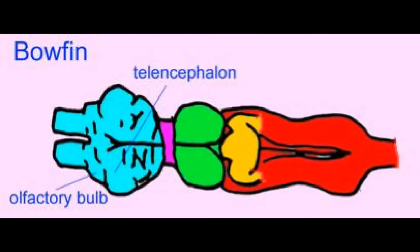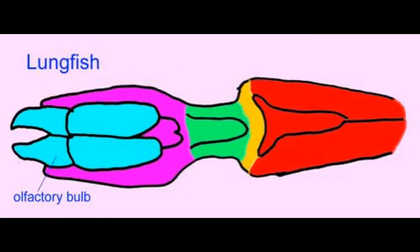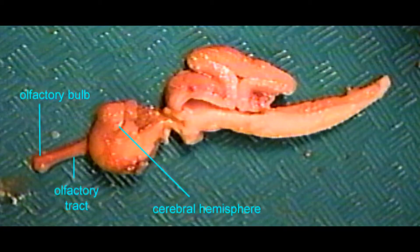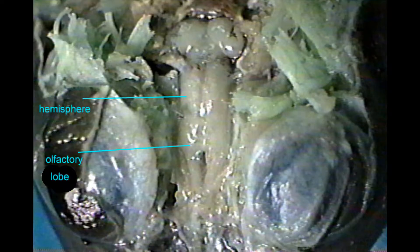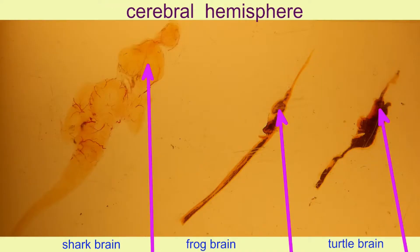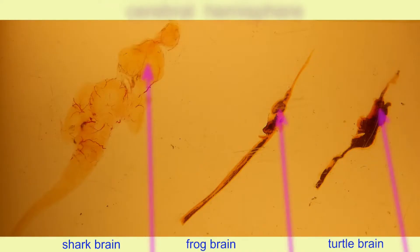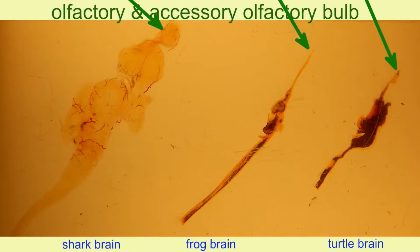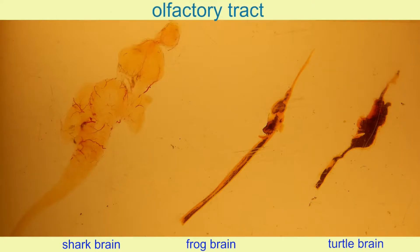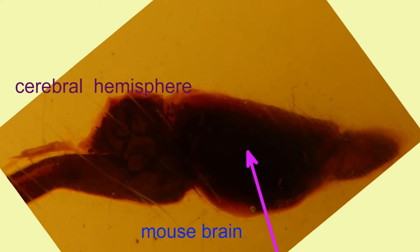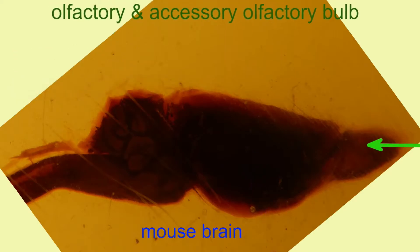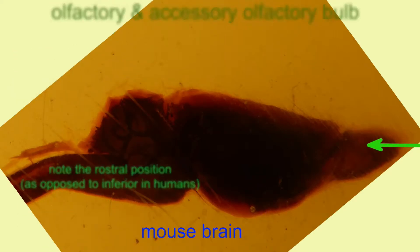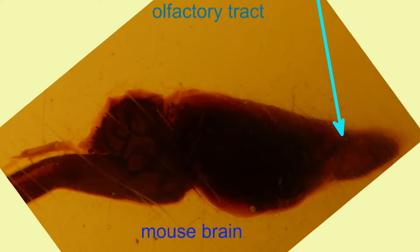Is the cerebrum in these animals the same as that of humans? There are some similarities but obviously great differences as well. One of the similarities is the olfactory bulb, the accessory olfactory bulb, and the areas which process smell or olfaction. It seems that in the earliest vertebrates the cerebrum was primarily an area which processed the sense of smell.